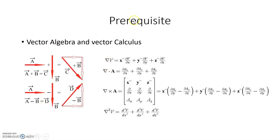Hello. To study the Electromagnetic Engineering subject, the pre-requisites are Vector Algebra and Vector Calculus. In Vector Algebra, we must know addition and subtraction. In Vector Calculus, we must know the Gradient, Divergence, Curl, and the Laplacian operator.